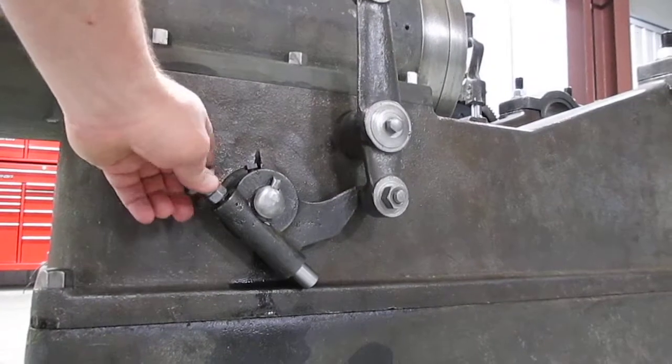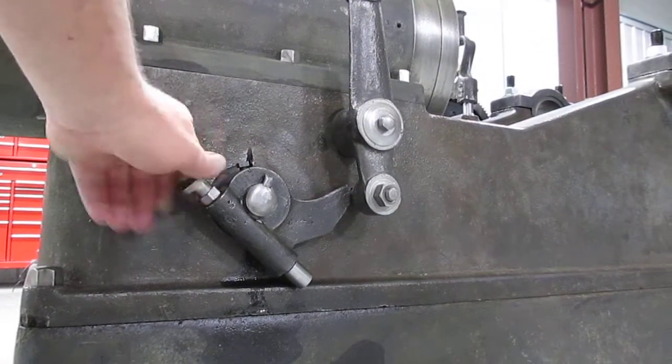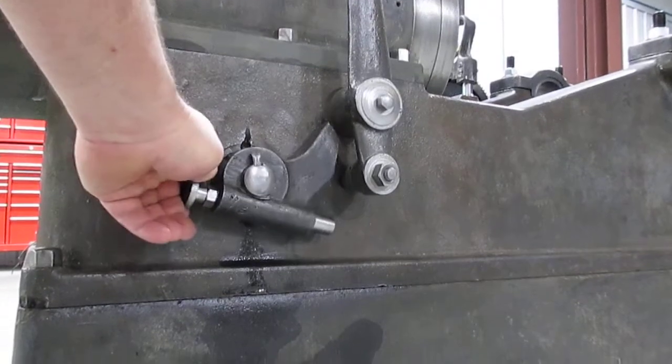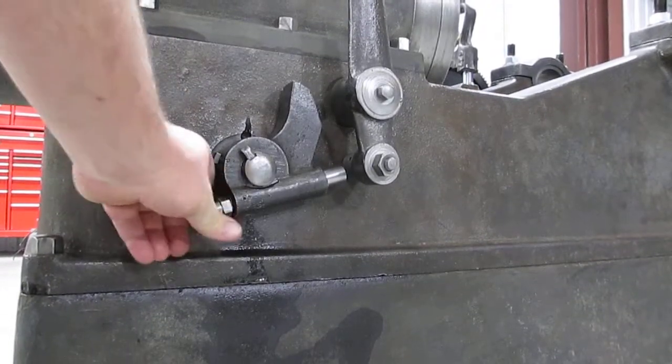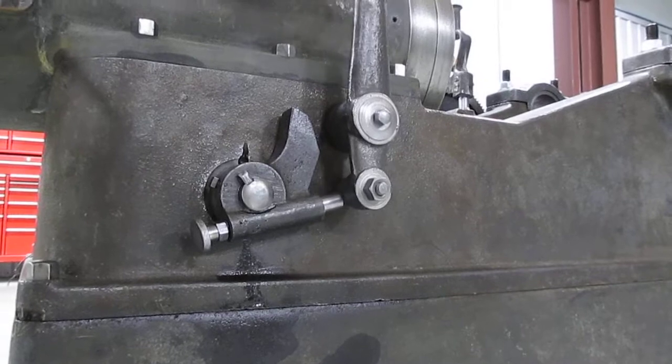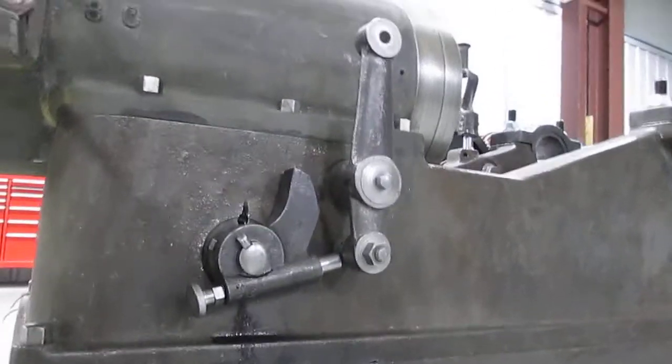This screw here is for a decompression device. When it comes up there, it'll bump the roller and let a little bit of compression out for starting.